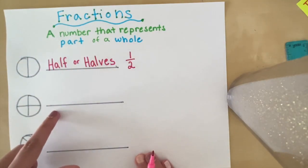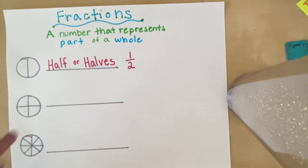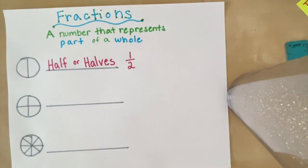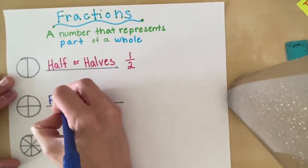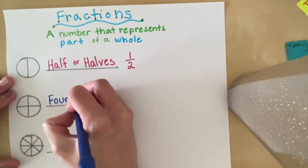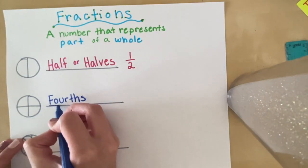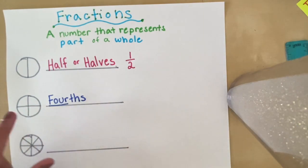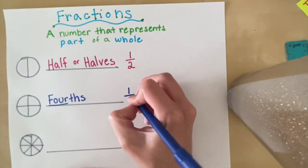Let's take a look at this bottom one here. Let's see how many equal parts there are: one, two, three, four. So if there are four equal parts to a shape, it's going to be called fourths. Why is it called fourths? Because there are only four equal parts — it's going to be really easy to remember. Fourths, four equal parts, and that is shown with a one over four.